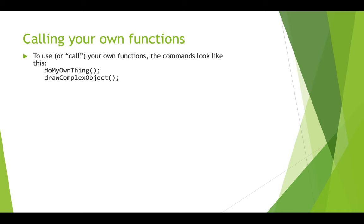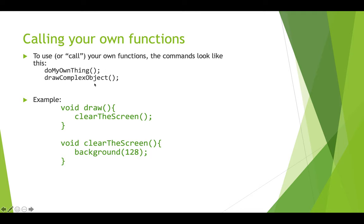To call a function, you just use the name as a statement in your program, followed by a semicolon. Here we're calling the doMyOwnThing function. As an example, if we created a clearTheScreen function that sets the background to a mid-gray, then in our draw function we can just call it by using that name.